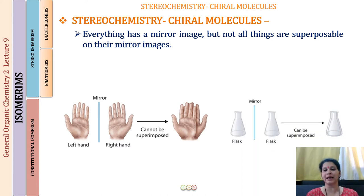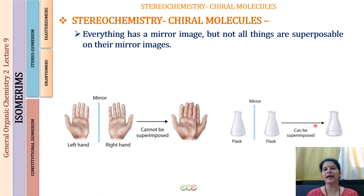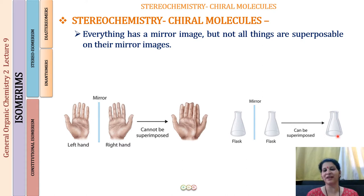On the other hand, if I have a flask and keep it in front of the mirror, I get another flask in the image. Both of them are identical to each other, so they can be superposed. If I keep them one above the other, you will not be able to see the image — it has been completely hidden by the object flask. Some things you can superpose; other things you cannot.